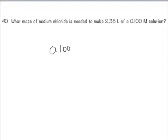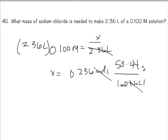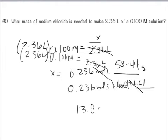You have the molarity of the solution. You do not know the number of moles, you know the volume, 2.36 liters. How do you solve for moles? Multiply both sides by 2.36 liters, cancels, you get x equals 0.236, this is moles. Because this is sodium chloride, I know that one mole of sodium chloride has a mass of 58.44 grams, moles cancel, I multiply and you get 13.8 grams.